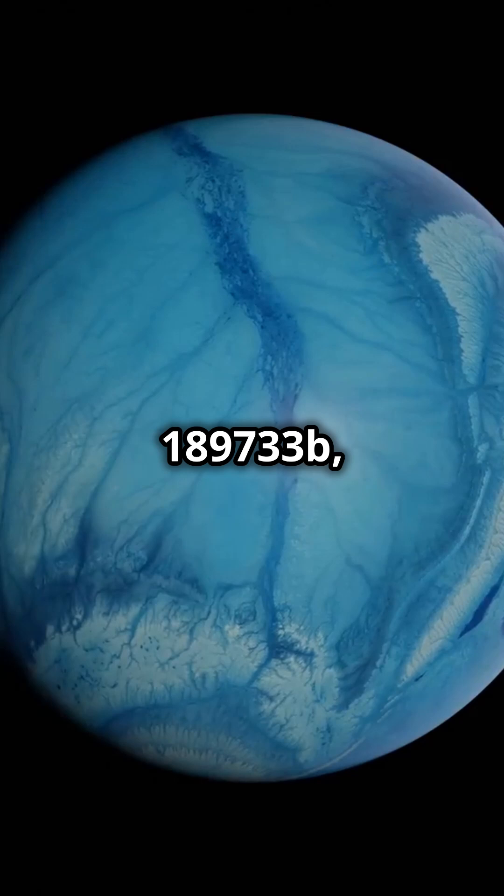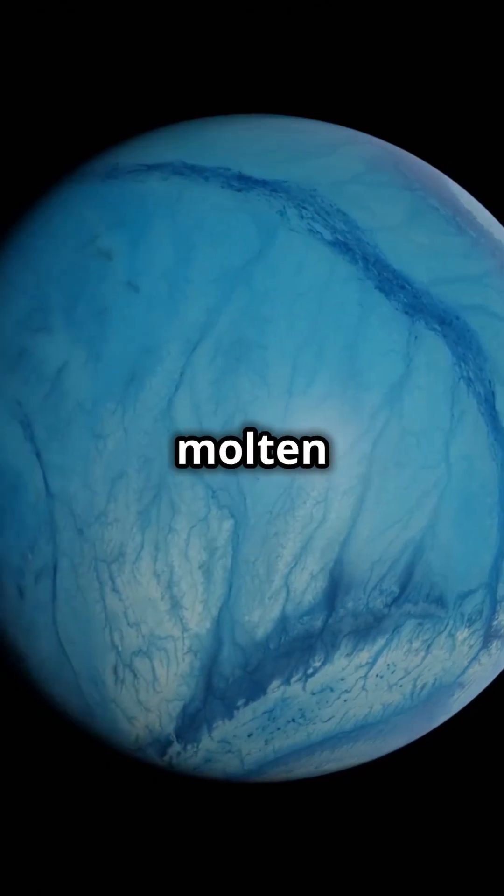This is HD 189733 b, a planet that rains molten glass, sideways.